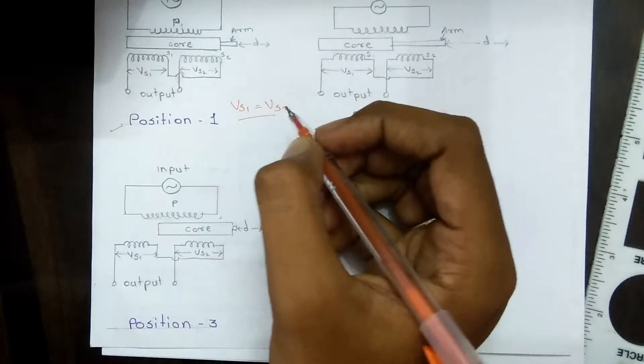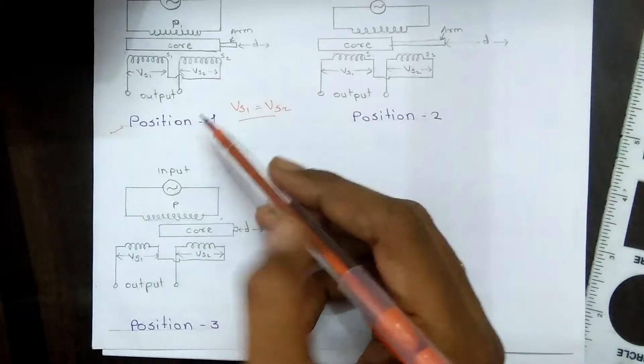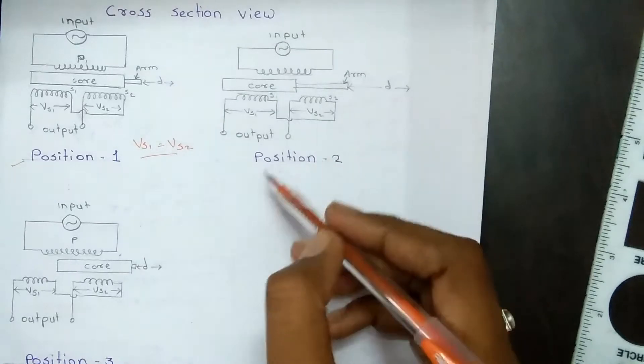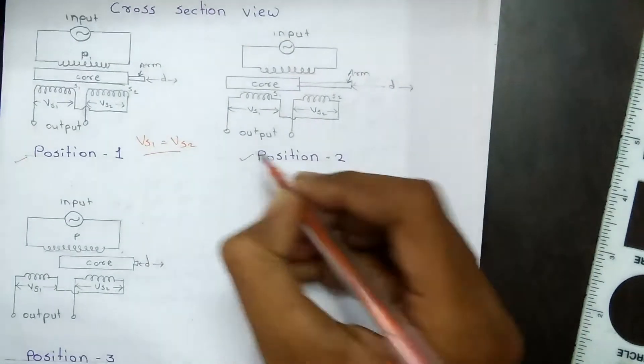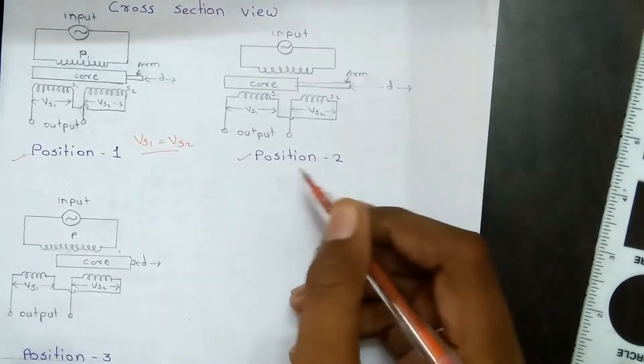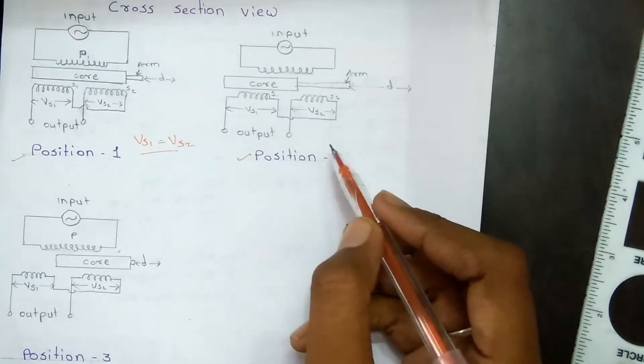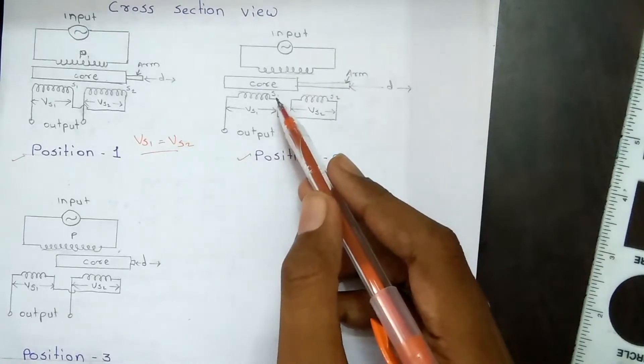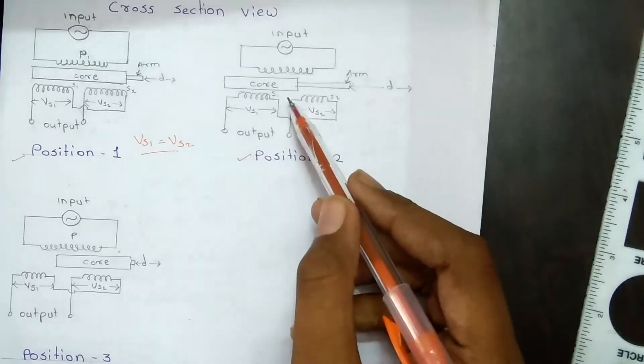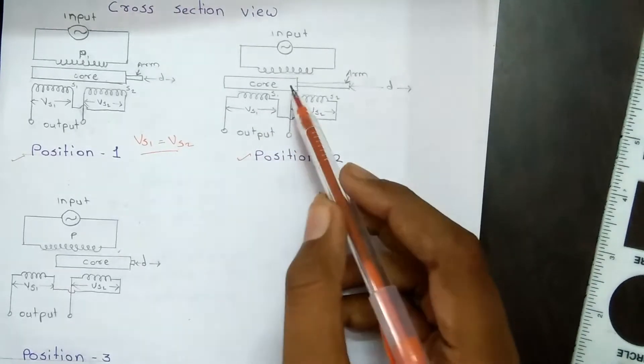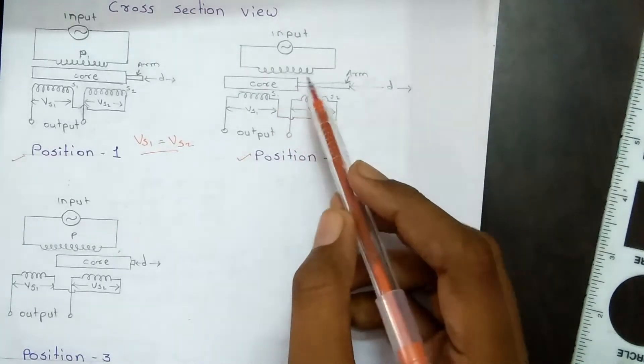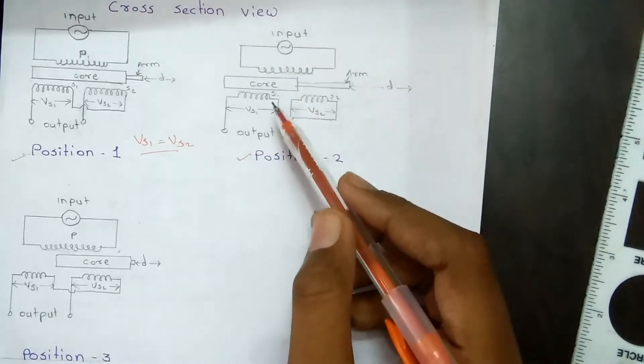Position 2: when there is a positive displacement applied to the core, that is, the core is moved to the left of null position, more flux links with winding S1 than winding S2.